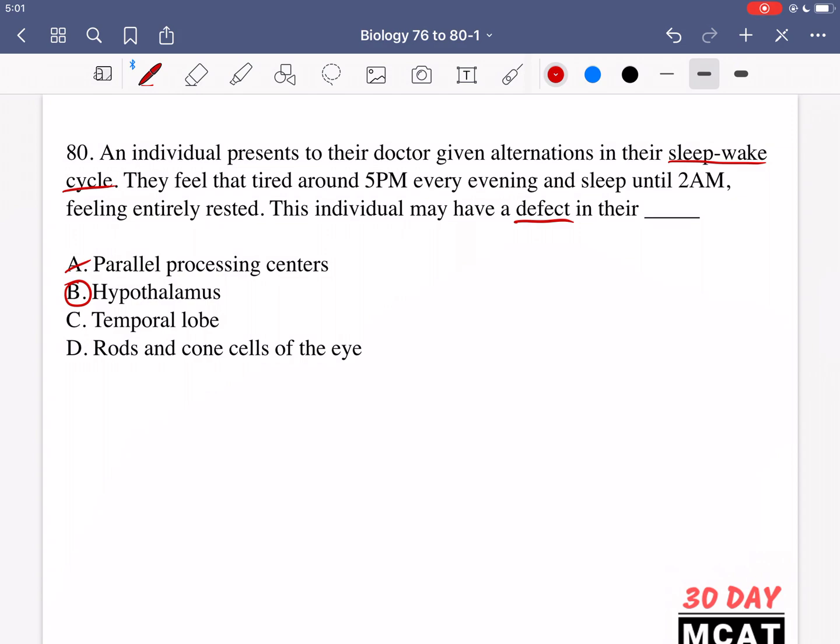Option C is talking about the temporal lobe. And some functions of this lobe include vision, memory, language, and emotion. But it is not related to the sleep-wake cycle.